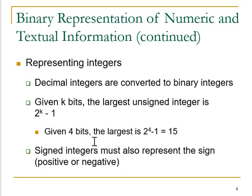So if you have 4 bits, the largest integer will be 2 to the power 4 minus 1, which equals 15. When we are going to represent signed integers, signed integers will always be represented with a sign — it could be positive or negative.